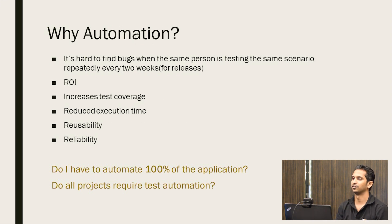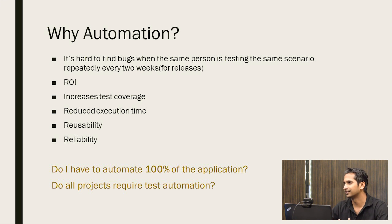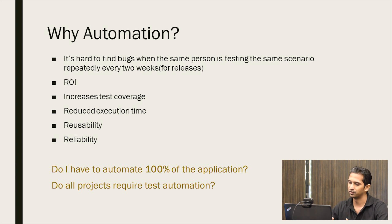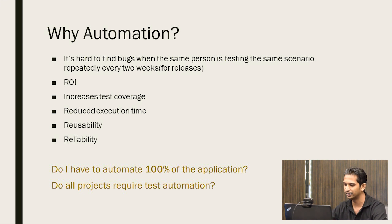So why automation? If you go to the web or read a book about automation, everything starts with 'humans make mistakes, so you need automation.' Let's keep that out for a second. Why automation in a practical way? It's hard to find bugs when the same person is testing the same scenario repeatedly for every release. Since most companies have moved into Agile, we are doing two-week or three-week releases. If one person is testing the same scenario over and over, it will work for three to four months, then you will get bored and may slip some bugs. You will actually get used to testing the happy path only, and you won't really test all the combinations of a scenario. That's why we need automation.